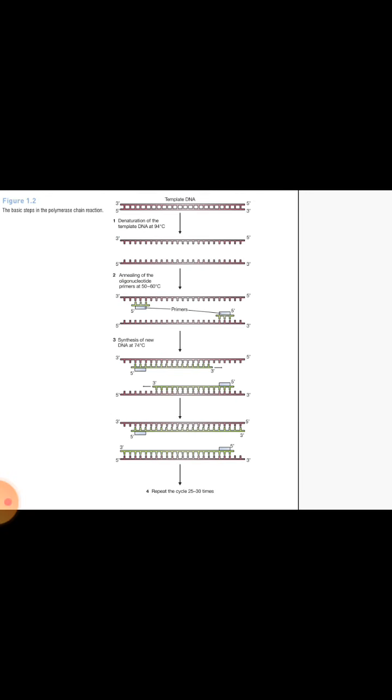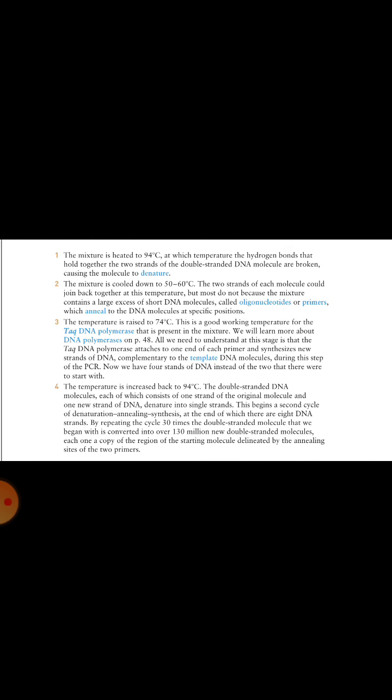We can repeat this cycle many times because we want a large number of copies of DNA. The steps — denaturation, annealing, extension — repeat, and when we run the thermal cycler for around 32 cycles, we get billions of copies of the DNA of interest.